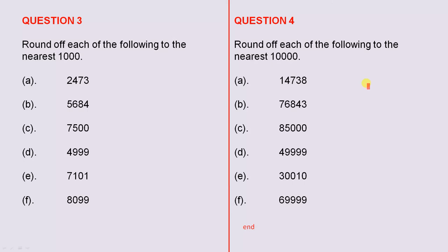Question four asks us to round off each of the following to the nearest ten thousand. This is a little bit more challenging than the first few. You can see here there are four zeros.